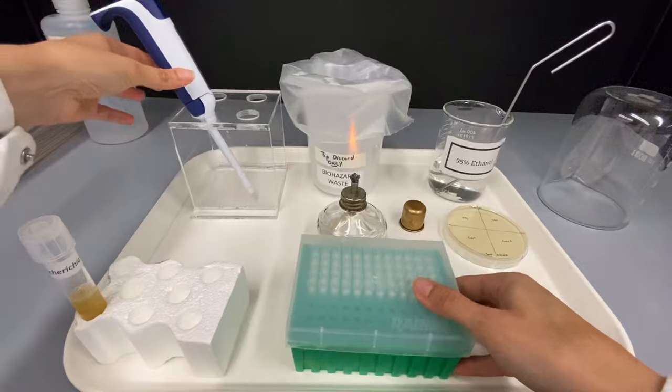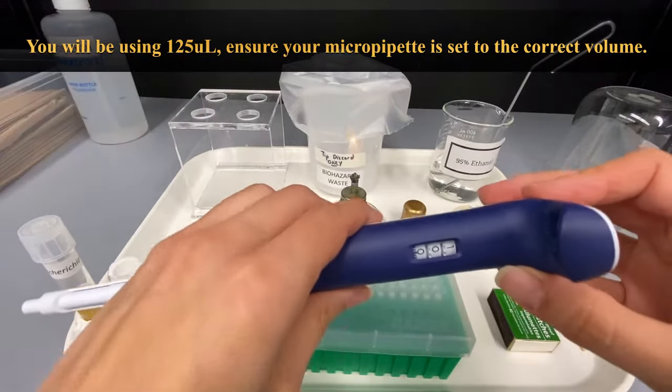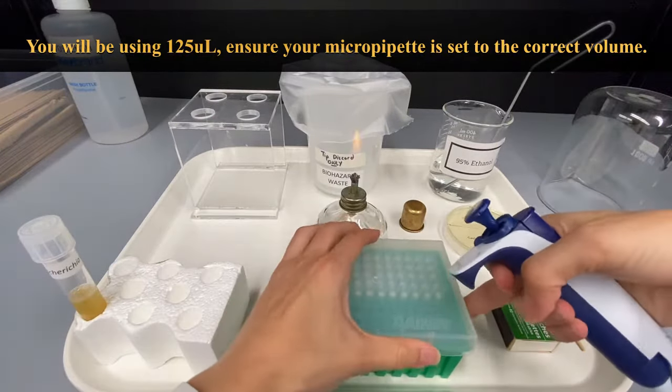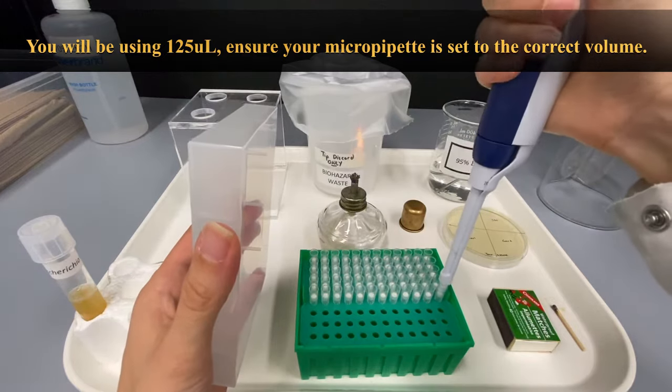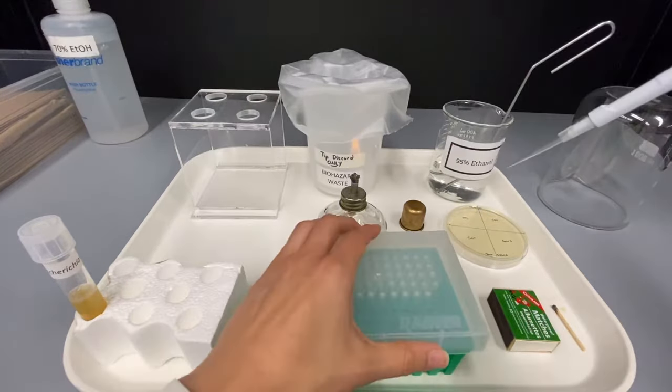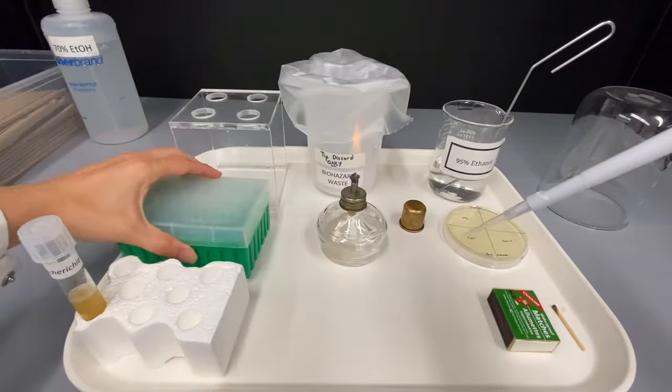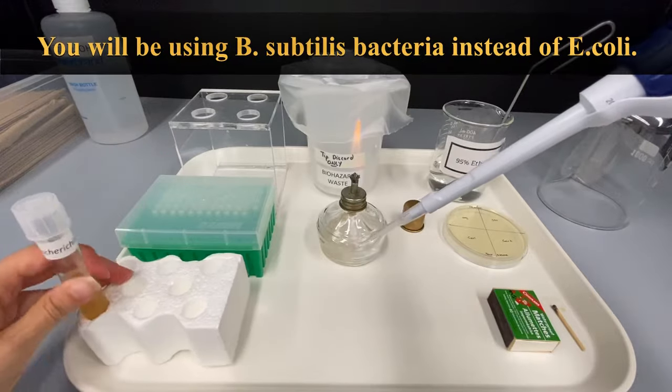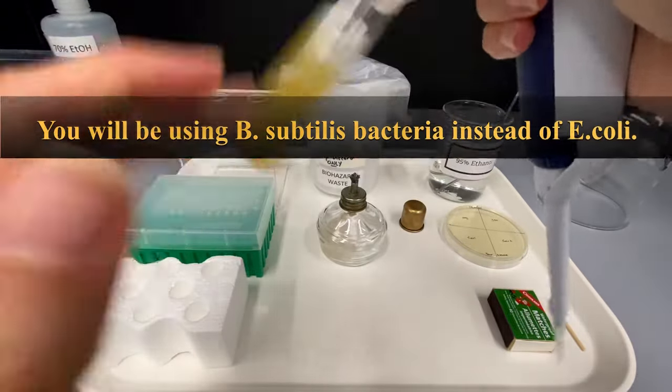Pick up your micro pipette and make sure that it is set to 100. Lift the lid on the tip box. Put the pipette in a tip and push firmly to ensure a proper seal. Resuspend your E. coli bacteria by gently flicking the tube.